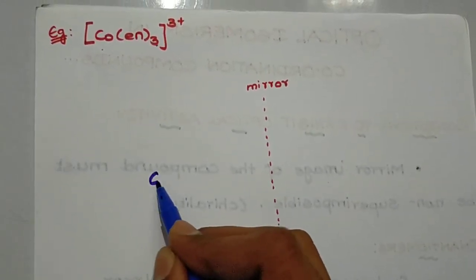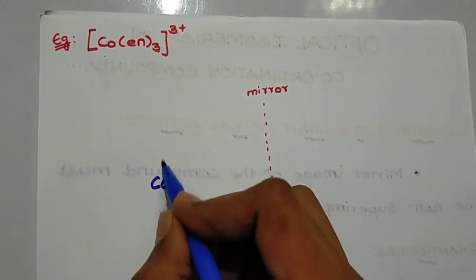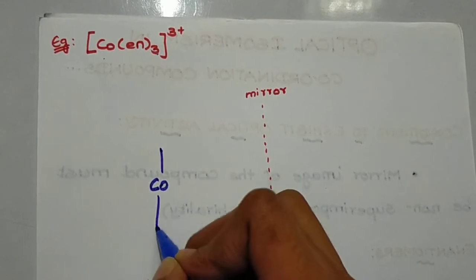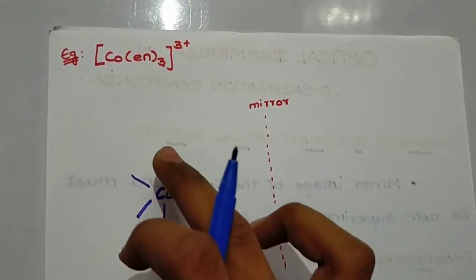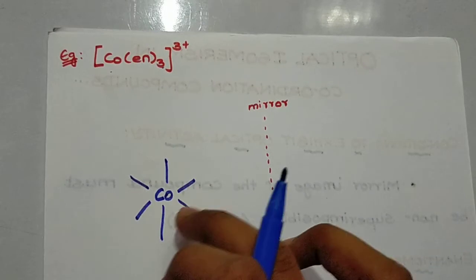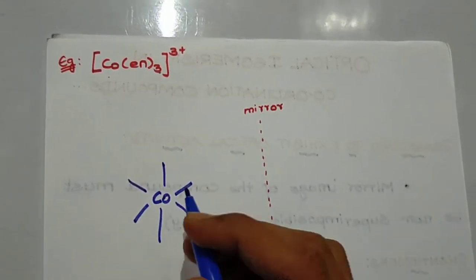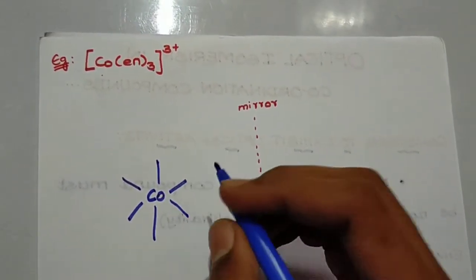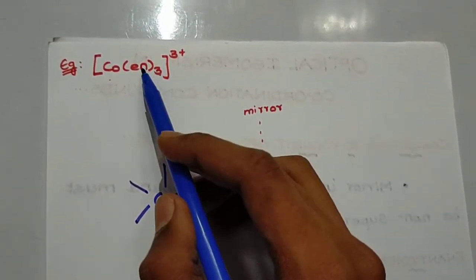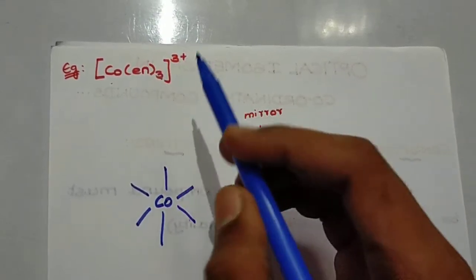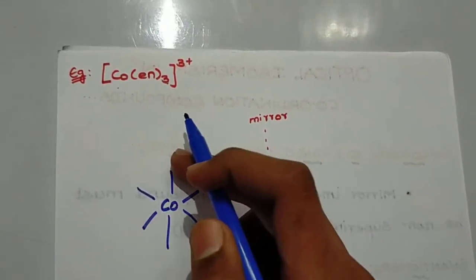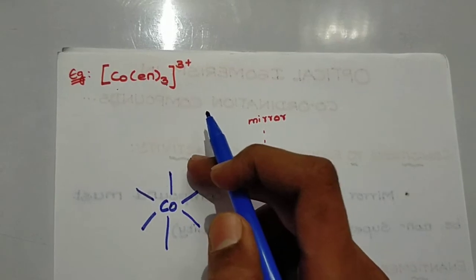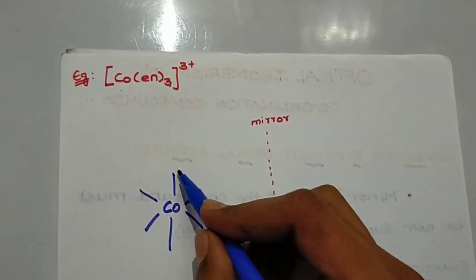The structure here is octahedral. The central metal atom is in an octahedral geometry with 6 coordination sites — 1, 2, 3, 4, 5, 6. So the structure is octahedral.